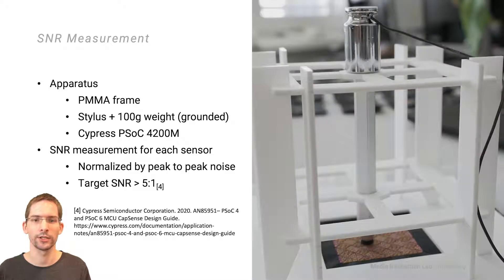We measured signal-to-noise ratio for each sensor cell in all four matrix variants to determine the sensitivity to touch. For consistent results, we used a stylus held in place by a custom-built PMMA frame. This construction was aligned for each sensor before measurements were taken with a grounded weight placed on top of the stylus to simulate a soft touch. The peak-to-peak normalized SNR was measured using a Cypress PSoC 4200M. A ratio of at least 5 to 1 is recommended to ensure reliable touch sensing performance with this hardware platform.